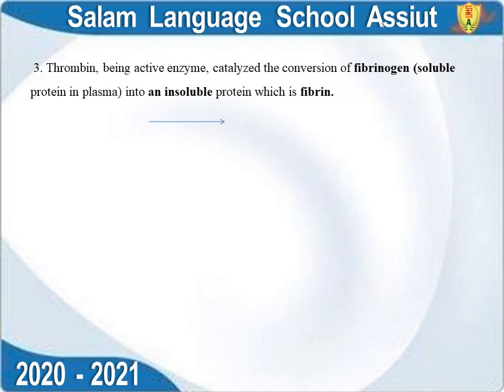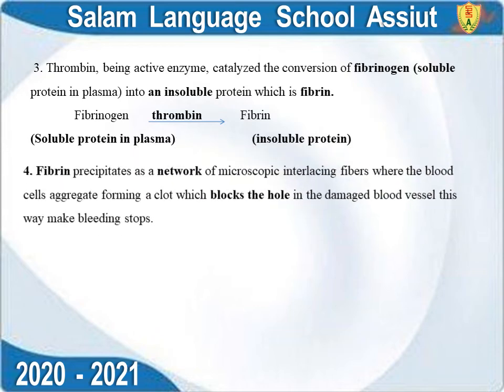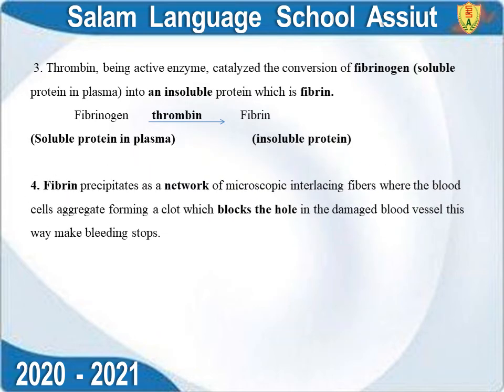Number three — thrombin, the active enzyme, converts fibrinogen (a soluble protein present in plasma) into fibrin. Fibrin precipitates as a network of microscopic interlacing fibers. Blood cells aggregate within this fibrin network, forming a clot that blocks the hole in the damaged blood vessel and stops bleeding.